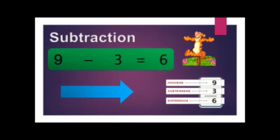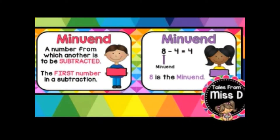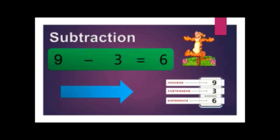Now the meaning of the parts of subtraction. Subtrahend means a number to be subtracted from another — the second number in subtraction. Minuend means the number from which another is to be subtracted — the first number in subtraction. And of course the answer of subtraction we call it difference. That's all for the parts of subtraction.